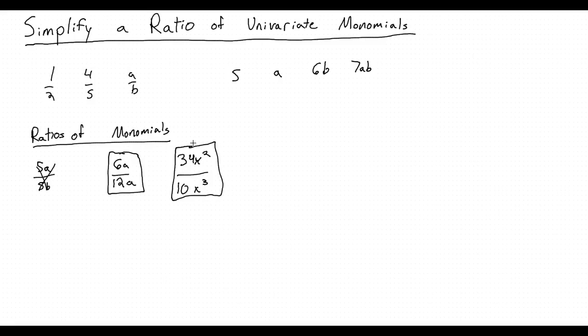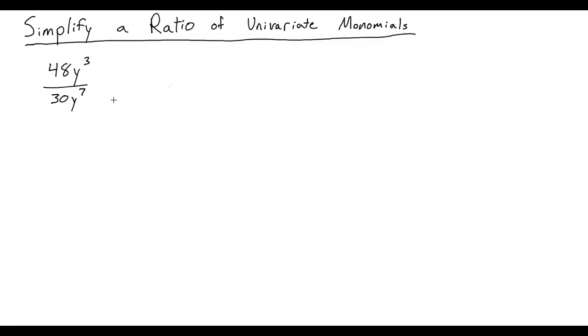So now that we know what a univariate monomial looks like, we can go about how to simplify them. Let's take an example of a univariate monomial: 48y to the third over 30y to the seventh. Where do I start? There are two parts that we can simplify here, the first being the integers and the second being the variables.